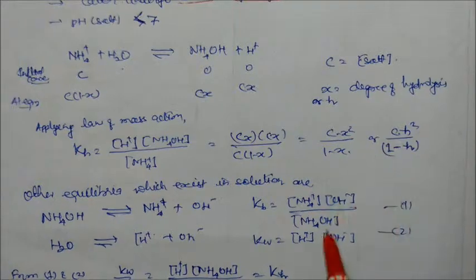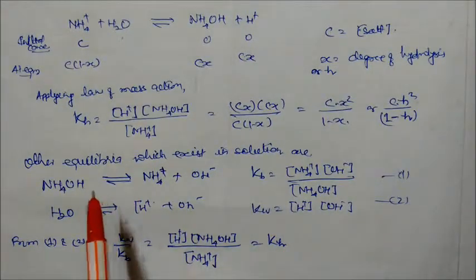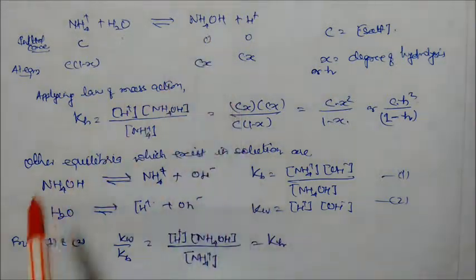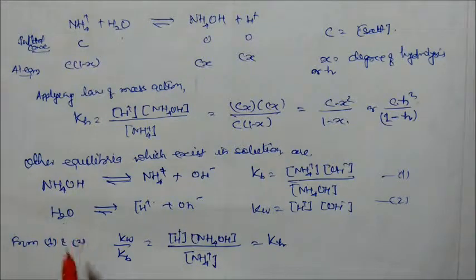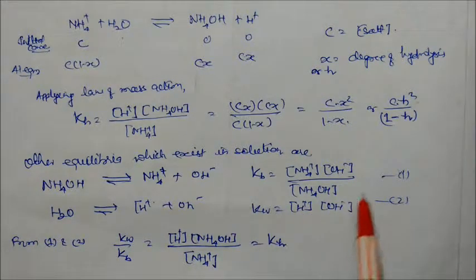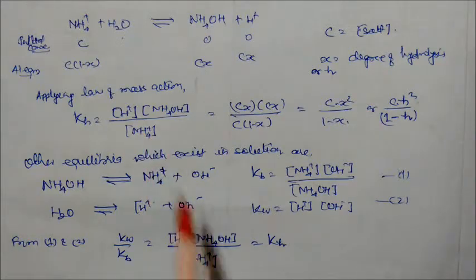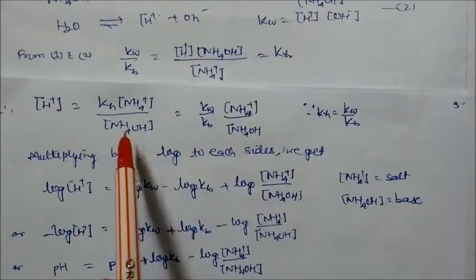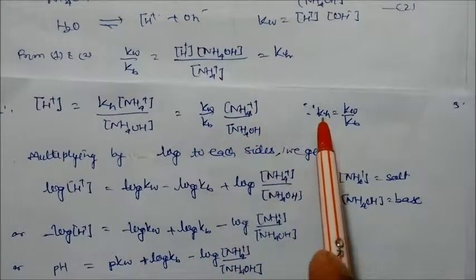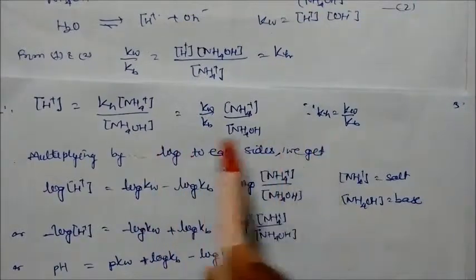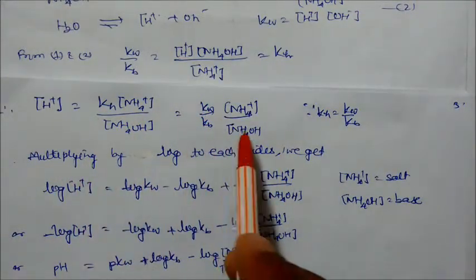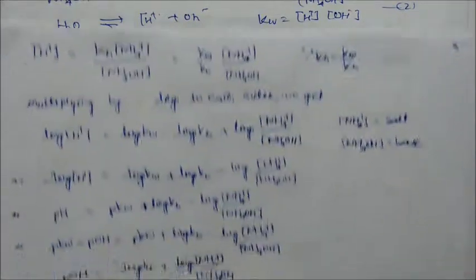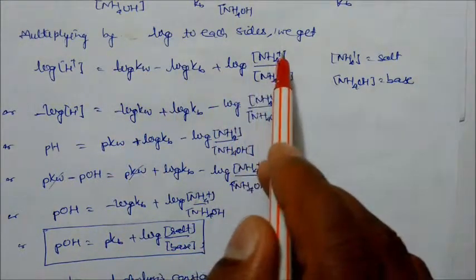For the ammonium hydroxide equilibrium, KB is defined; for water, KW = [H⁺][OH⁻]. Dividing KW by KB gives a value equal to KH. Therefore KH = KW / KB. From this, [H⁺] = KH × [NH₄⁺] / [NH₄OH], and KH = KW / KB. Taking the log of both sides: log[H⁺] = log KW − log KB + log([salt]/[base]). Converting to pH: pH = pKW − pKB + log([salt]/[base]), giving pOH = pKW − pKB + log([salt]/[base]).